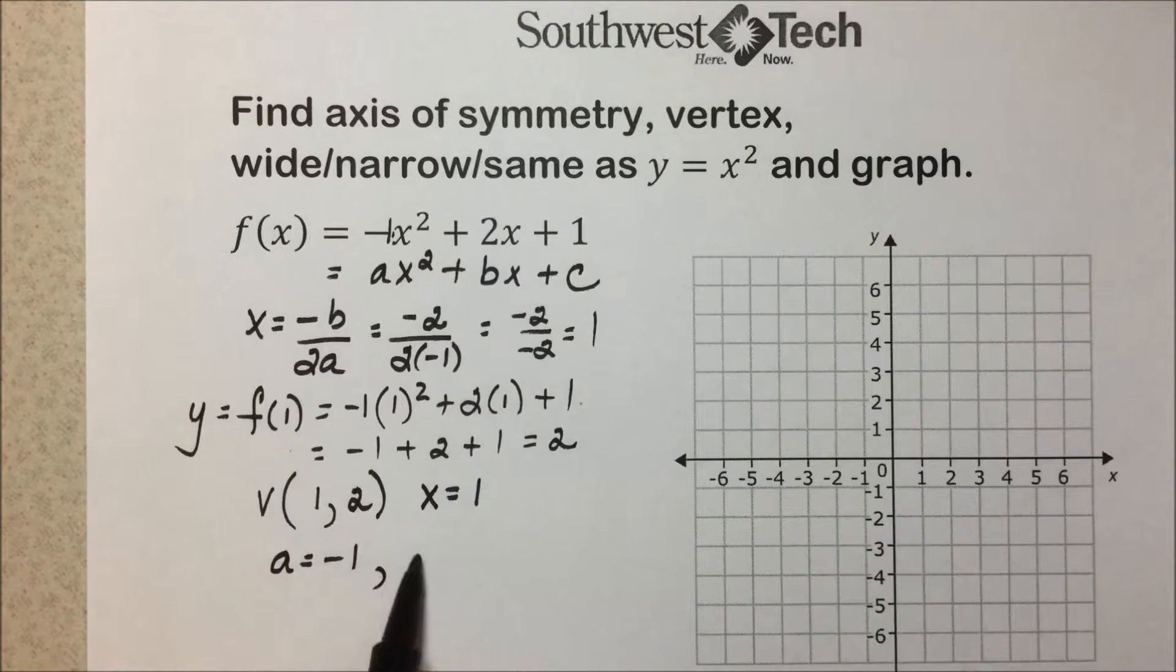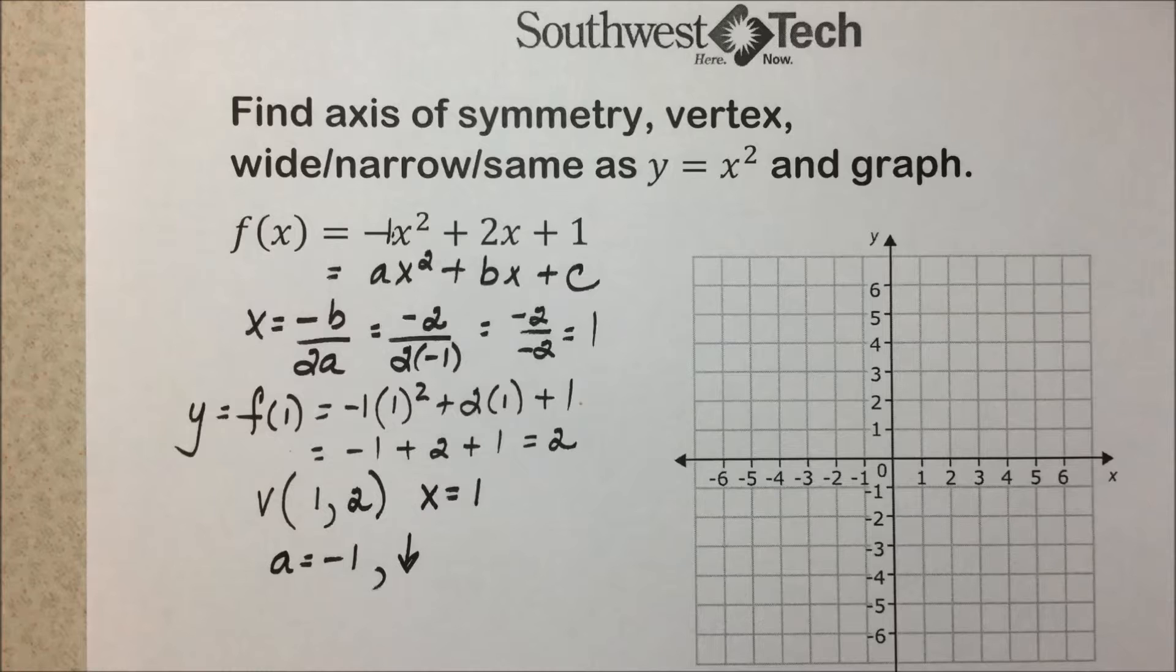a is equal to -1. Since this is negative, the parabola is going to open downward. That helps us with getting an estimate for the graph,